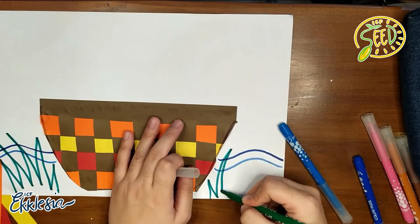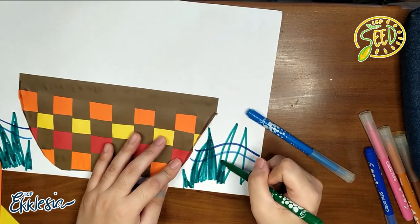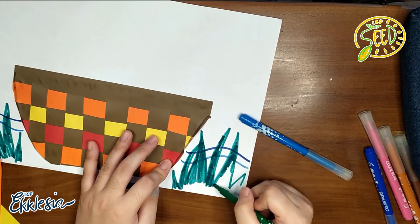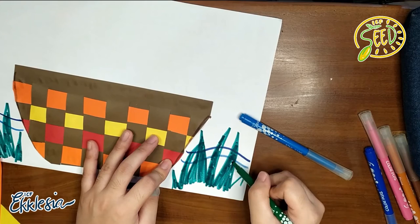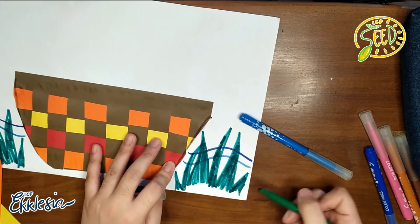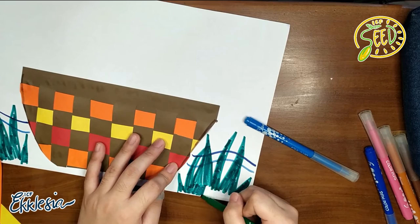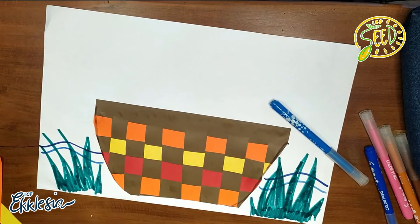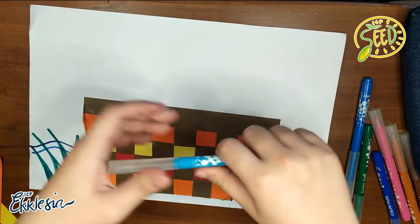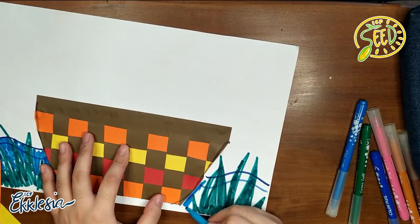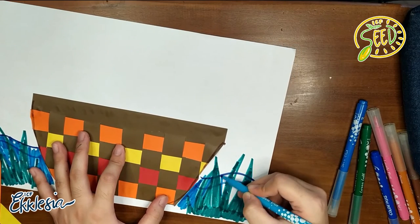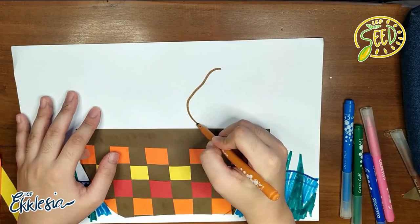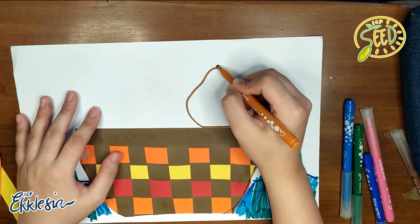Alam nyo na kung ano to? Ito yung basket kung saan inilagay si Moses. Yung baby pa siya. Pwede nyo gawin lahat ng coloring, ng drawing. Lagay kayo ng grass, maglagay kayo ng water. Tapos, pwede nyo din i-drawing yung baby, si baby Moses, sa loob ng basket. Hindi nyo kailangan maging katulad na katulad sa ginagawa ko kasi alam kong mas kaya niyo pang magandahan lalo. Saka, okay lang kahit iba-iba tayo ng drawing. Lahat ng nagagawa ng iyong kamay ay maganda.